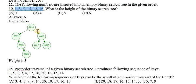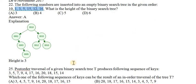15 is coming — greater than 10, placed to the right. 12 is greater than 10, goes right; lesser than 15, placed as left child of 15. 16 is greater than 10, goes right; greater than 15, placed as right child of 15. They are asking the height of this binary search tree. Going from root: level 1, 2, 3 — totally 3. The height is 3.